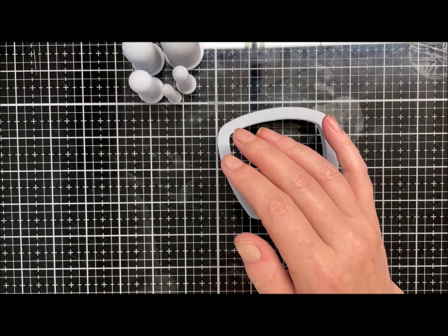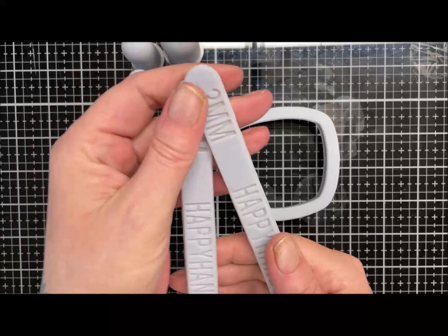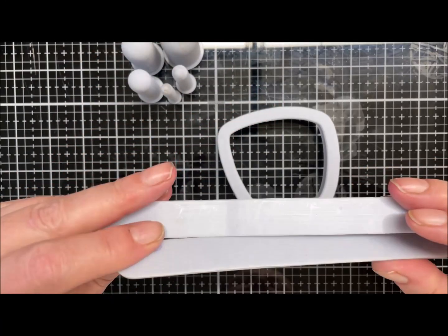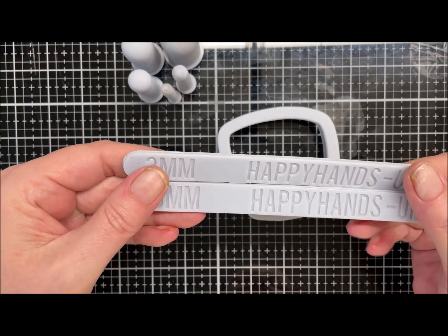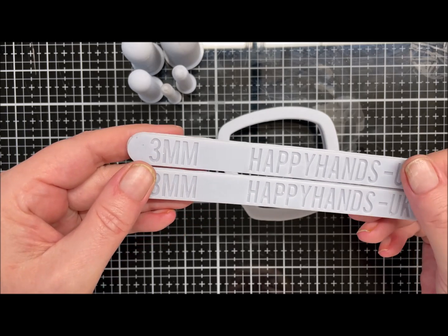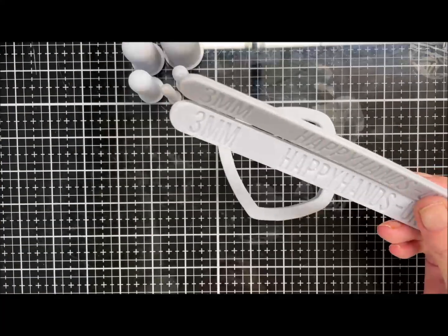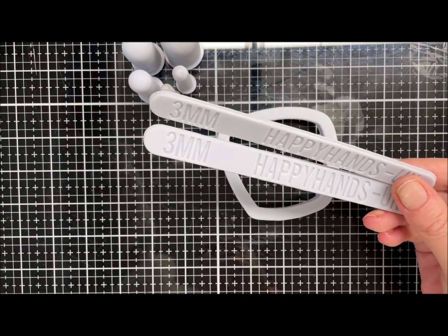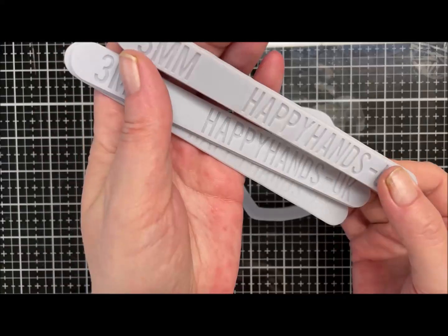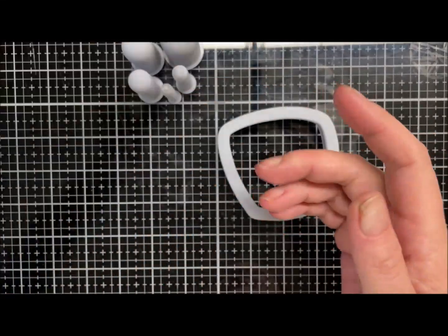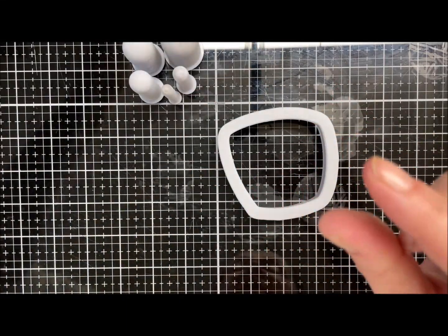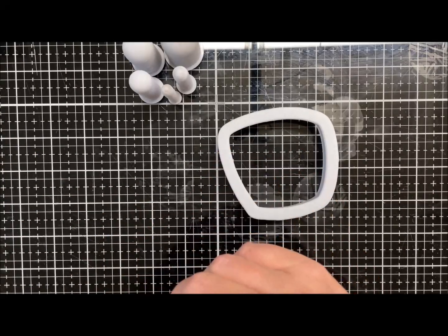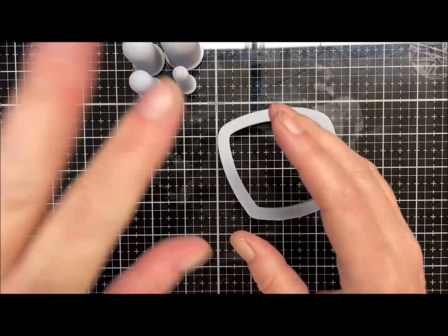These are on the site as well if you're interested. They go from, I think the thinnest is a 1.5 mil and they go all the way up to a 6 mil. So if you're a hand roller or you'd like more substantial pendants like I tend to do, they're fabulous for that. The 6 mil one is just a lovely lovely thickness.